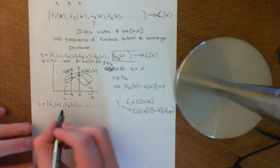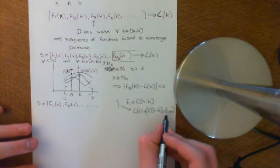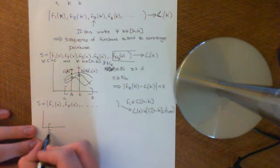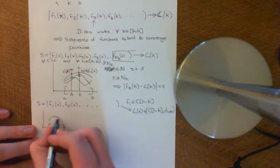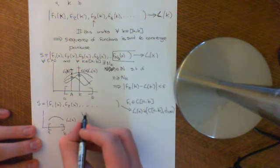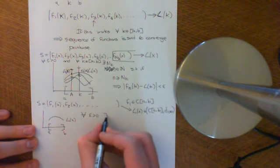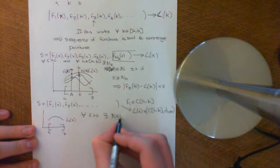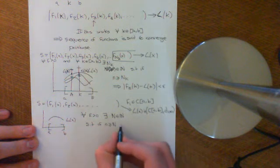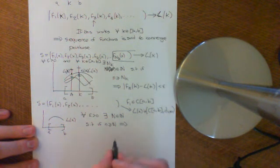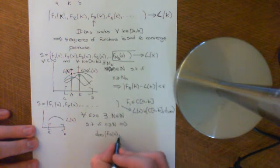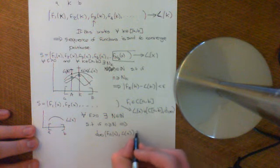Let's recall what it means to converge in the supremum metric. We have the interval A to B, here is our limit function L(x), and we have a sequence of other functions converging to L(x). What that means is: for all epsilon greater than 0, there exists some big N which is an element of the natural numbers, such that if little n is greater than or equal to big N, it implies that the distance in the supremum metric between F_n(x) and L(x) is less than epsilon.